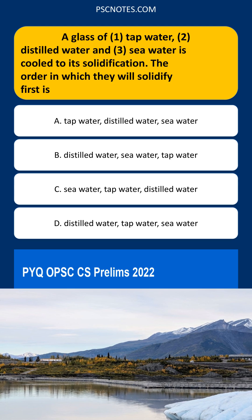Explanation — Correct answer: The correct order is distilled water, tap water, seawater.